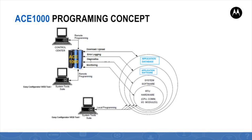The C application software is integrated with the ACE1000 Linux based system software running in the unit. An integrated C application may use various system software functions that allow access to the CPU resources and unit's database tables, scan of the IO modules, communication handshaking and other system operation. Each C application downloaded to the unit runs as a standalone Linux process.